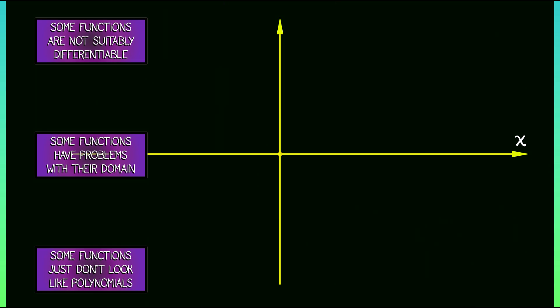What about a function like 1 over 1 minus x? That blows up. That has a vertical asymptote at x equals 1. But all the derivatives at x equals 0, they're all good. What about functions like that?